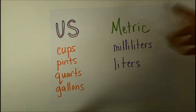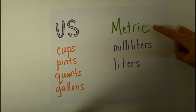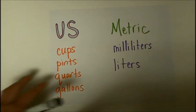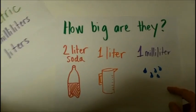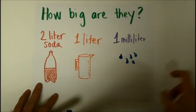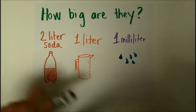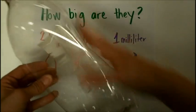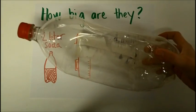Metric is the way that scientists and other countries measure volume. We have two main units in metric volume: milliliters and liters. Now, you're probably wondering how big are they? Well, you already have some experience with liters because you might have gotten a soda from the store in a two-liter bottle.